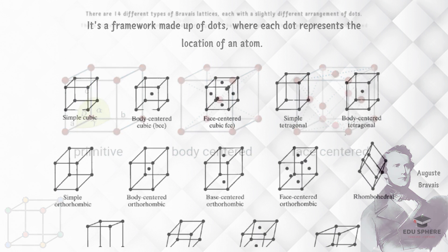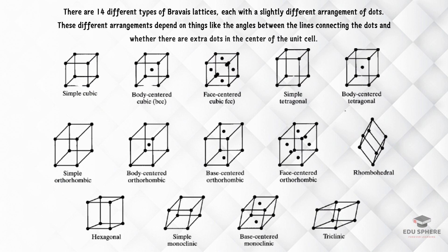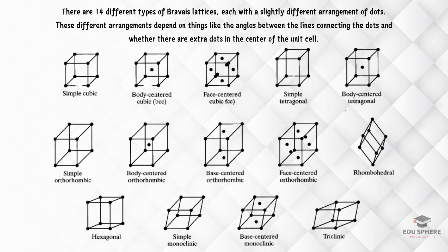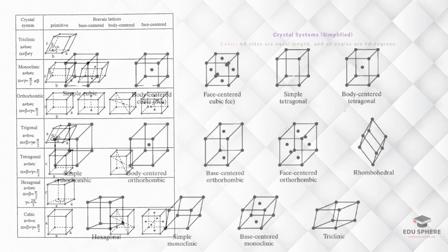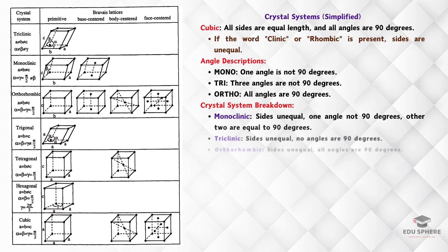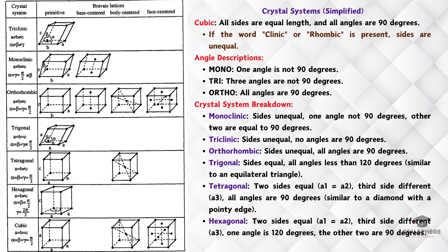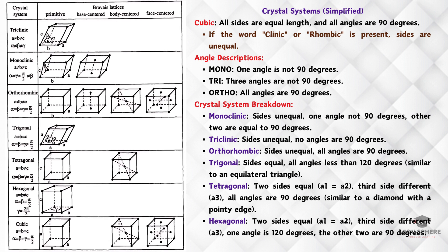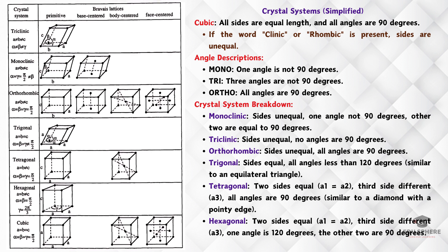As you can see in this table, there are a total of 14 different Bravais lattices, each with its own unique dot pattern. Some lattices have straight lines between dots, while others might have angles or even extra dots in the center. It all depends on how the atomic blueprint is arranged. These Bravais lattices are the foundation for understanding how crystals are built.